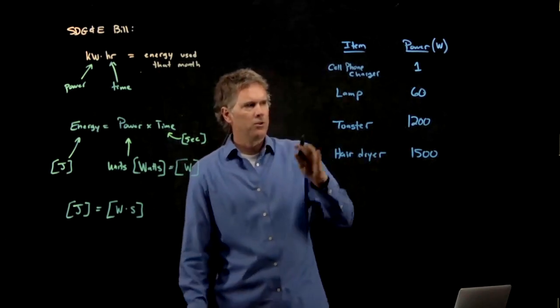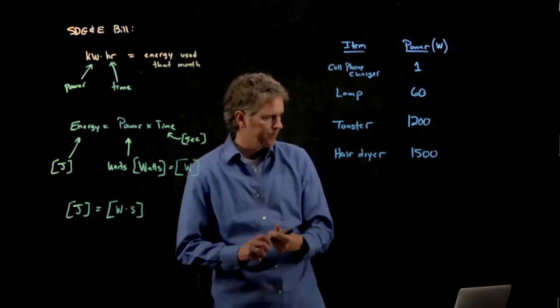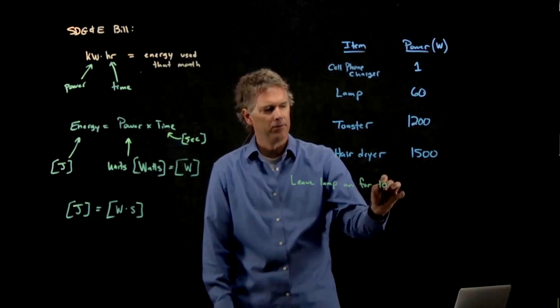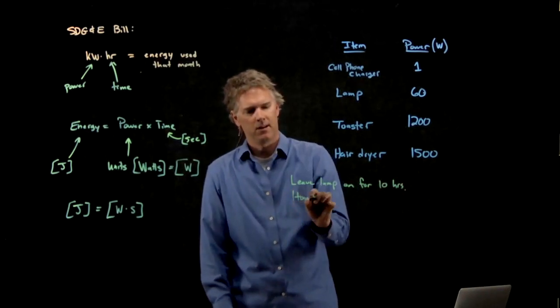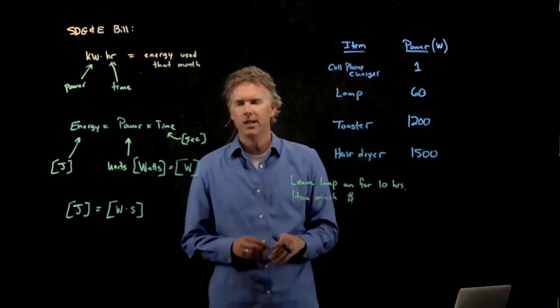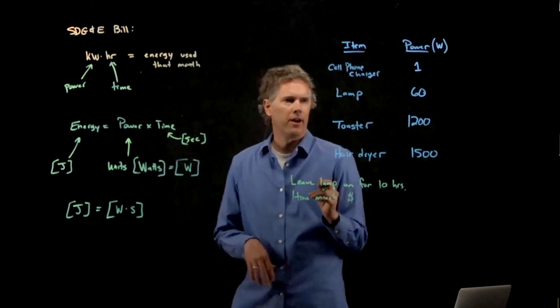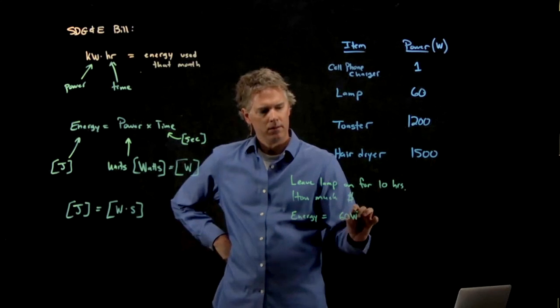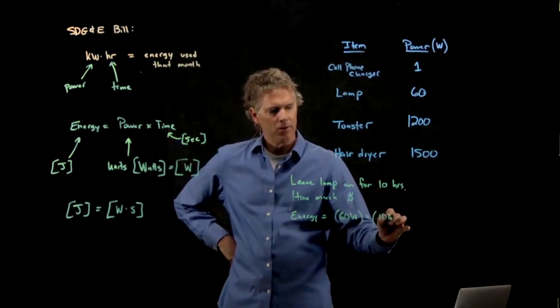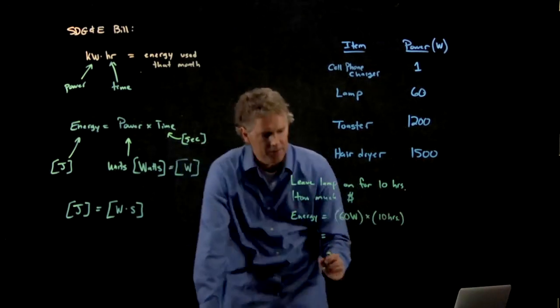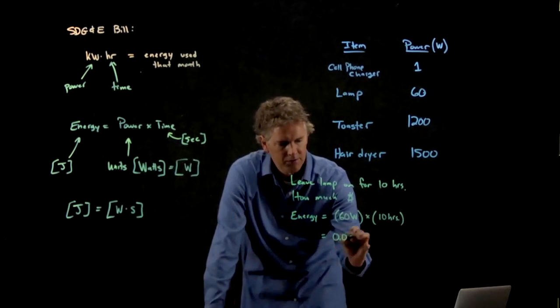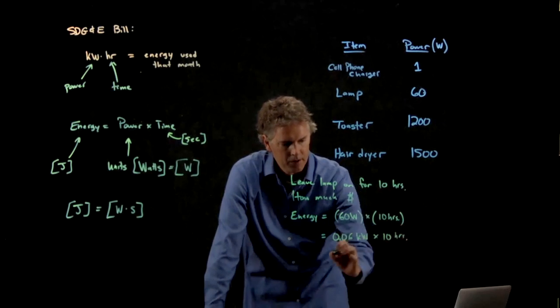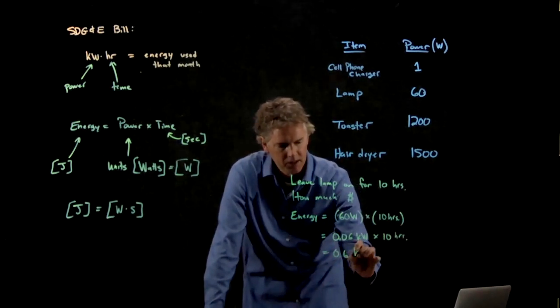So when you turn on your lamp, let's ask the following question. Let's say you're going to leave the lamp on for 10 hours. How much does that cost? How much are you going to have to pay SDG&E for that electricity that you use? Well, let's figure it out. The lamp is 60 watts. The time we just said was 10 hours. 60 watts is 0.06 kilowatts. And we're going to multiply that by 10 hours. And so we get 0.6 kilowatt hours.